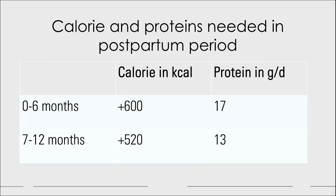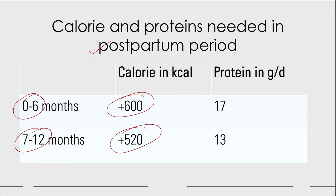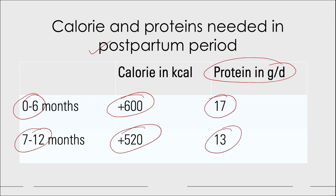What is the calorie and protein requirement during the postpartum period? We divide the postpartum period into the first 6 months and the next 6 months. During the first 6 months, the mother needs 600 kilocalories in excess of her normal requirement. In the next 6 months, she needs 520 kilocalories extra. For protein, during the first 6 months she needs 17 grams per day above normal, and in the next 6 months, 13 grams above normal.